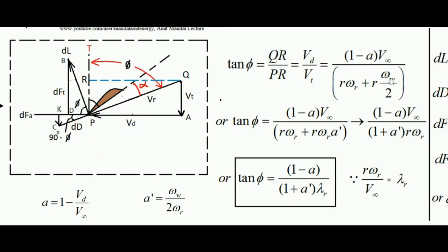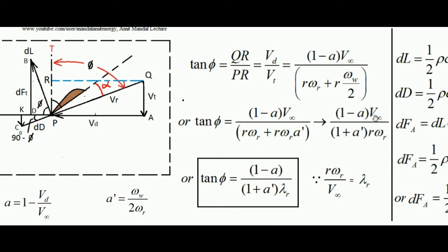Substituting ωR·A' in place of ωW/2, I can take out R·ωR from the bracket in the denominator. Ultimately, V∞ upon R·ωR appears in the expression. From the momentum theory lecture, R·ωR upon V∞ is called λR, the local speed ratio. So in place of that, I can write λR. That is it — tan φ = (1 − A) / ((1 + A')·λR).